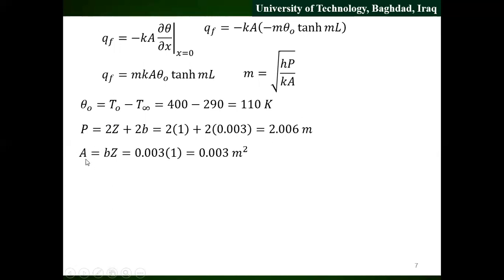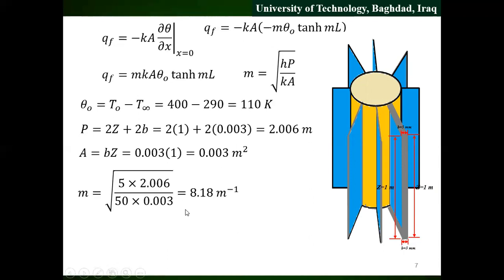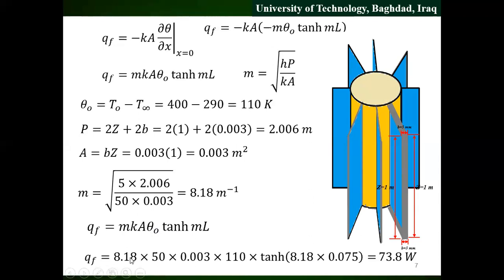Here is the cross-section area. We have 2Z plus 2B. We have Z and B values. So we have 2Z plus 2B, and we have 3D and the Z. We have 3Z plus B, giving 3.0. The Theta naught is 5.0. The cross-section area is 3.0, and the length L is 3.0.